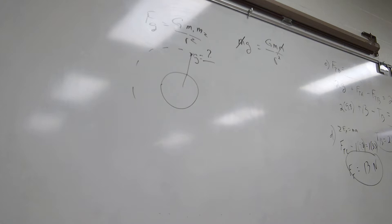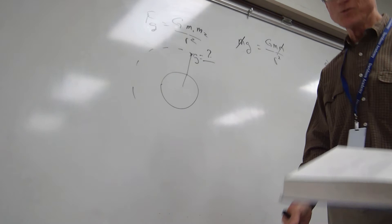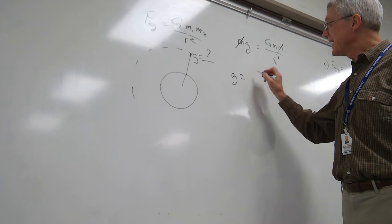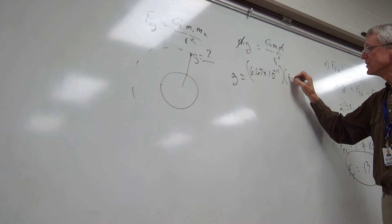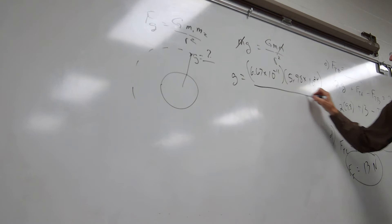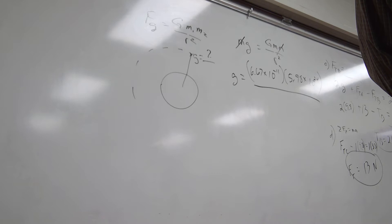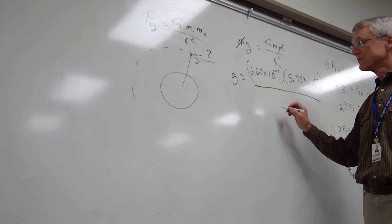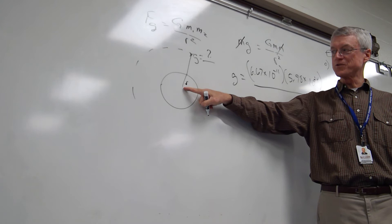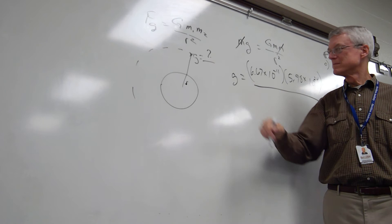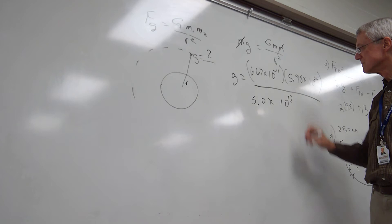The radius of Earth is 6.38 times 10 to the 6th meters. You add the radius to the height above the surface to get r, then square that entire distance in the equation. If you square just the radius of Earth and use the mass of Earth, you get 9.8 — confirming the equation works at the surface.